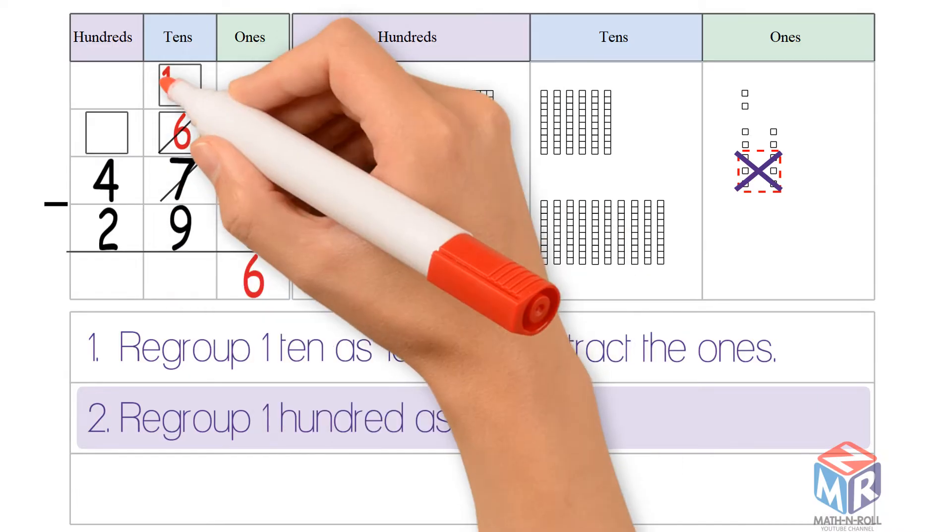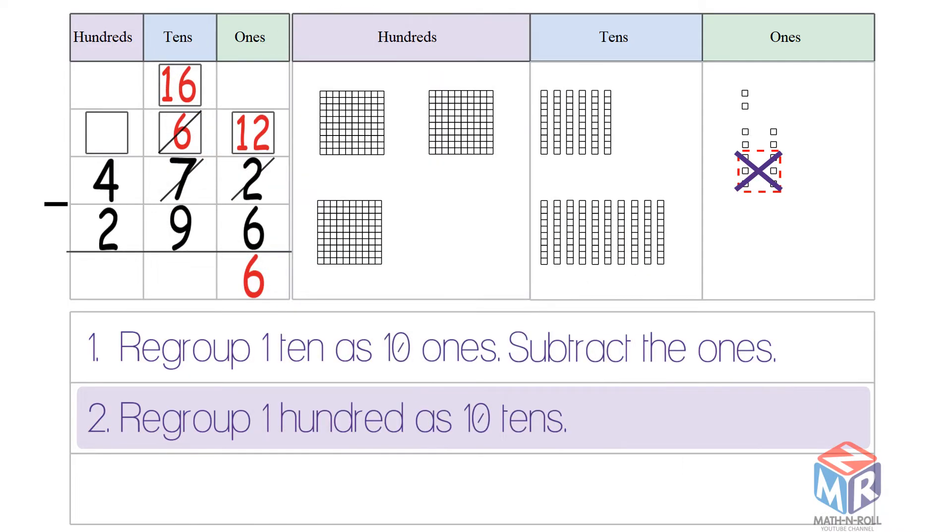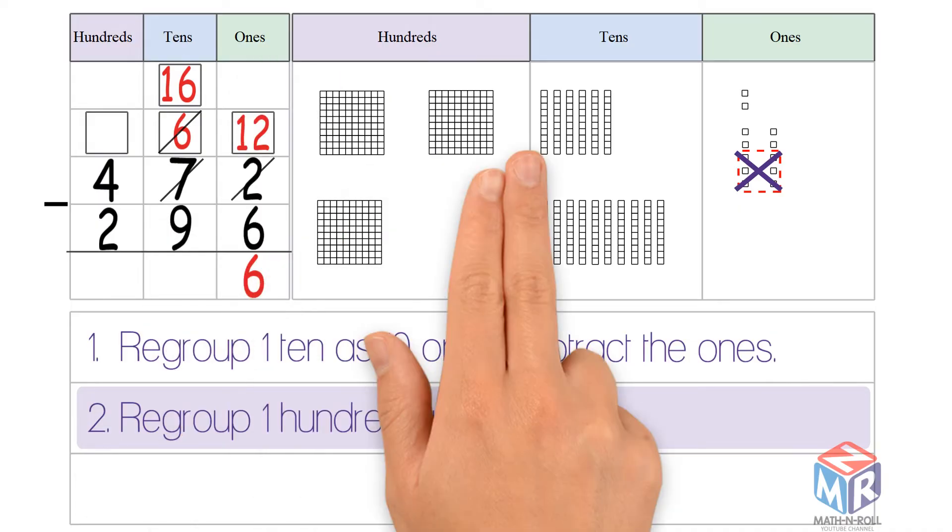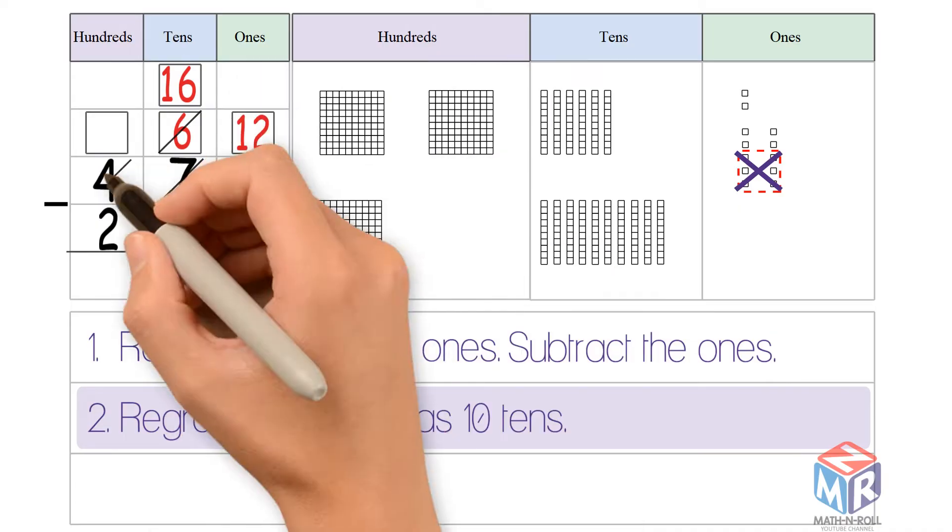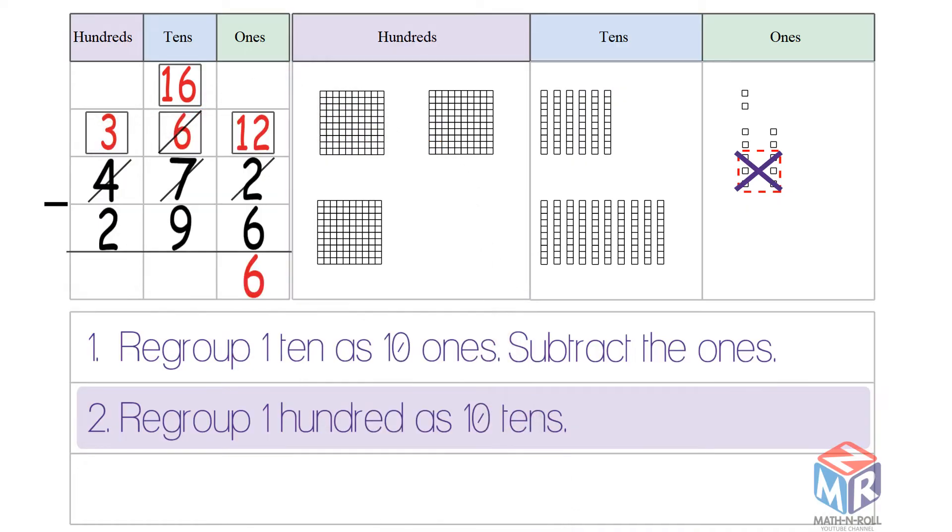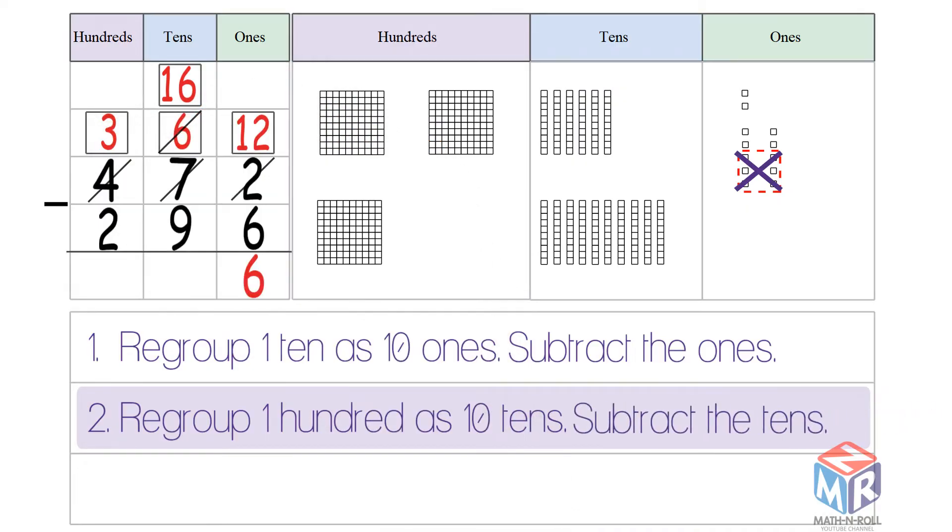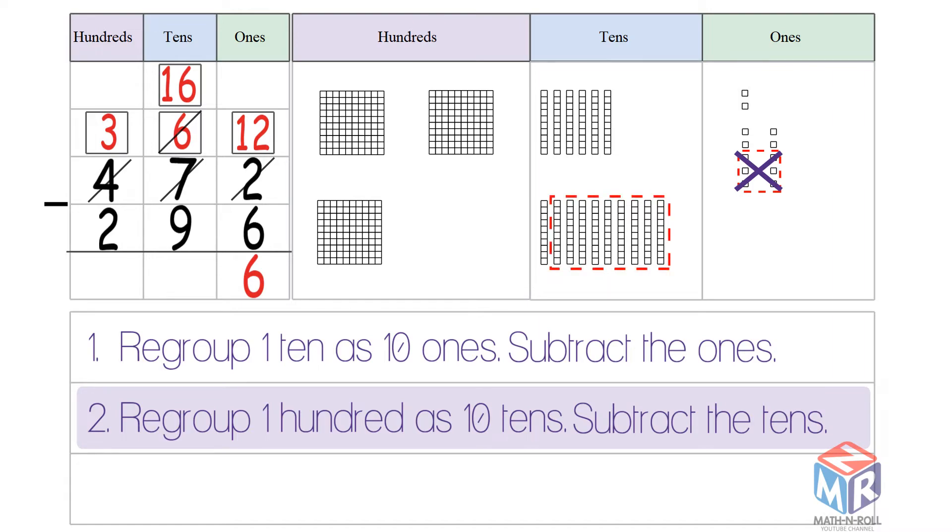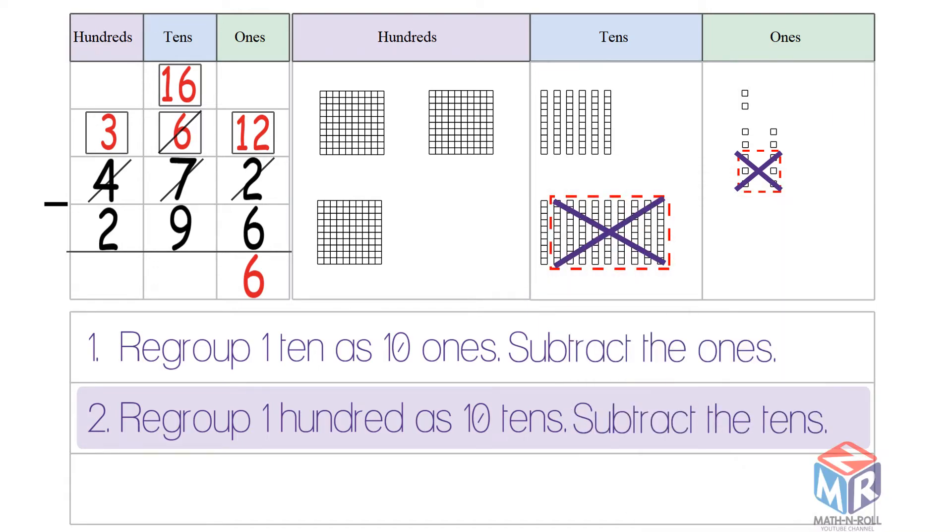Now we have 16 tens. 16 minus 9 is equal to 7.